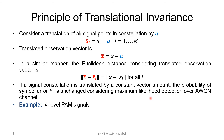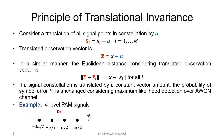If a signal constellation is translated by a constant vector a, the probability of error is unchanged under maximum likelihood detection and additive white Gaussian noise channel. As an example, on the left we have a 4-level PAM — pulse amplitude modulation — or amplitude shift keying if the bases are sinusoids. Another constellation diagram that is simply shifted to the right will have the same probability of error performance.